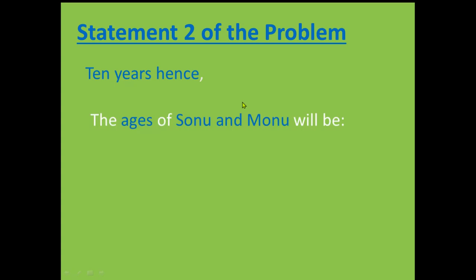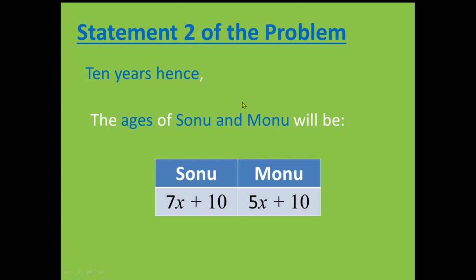Statement 2 of the problem: I have taken a part of the statement which says 10 years hence. What does it mean? It means that we have been given a scenario after 10 years. And what happens after 10 years? The age of Sonu and Monu will increase by 10 years. So Sonu's age will be 7X plus 10 and Monu's age will be 5X plus 10.